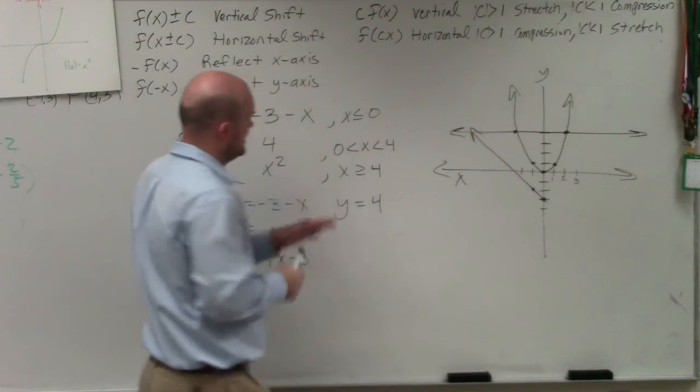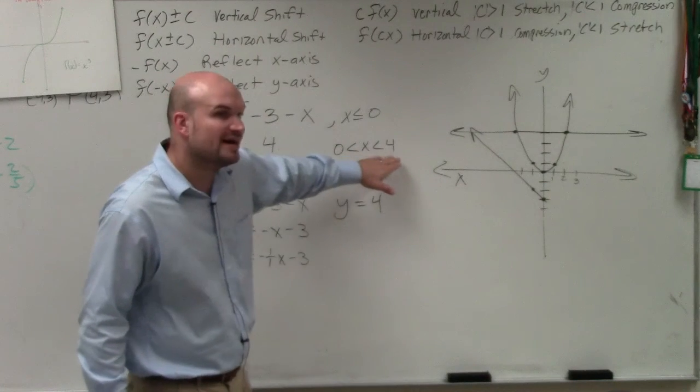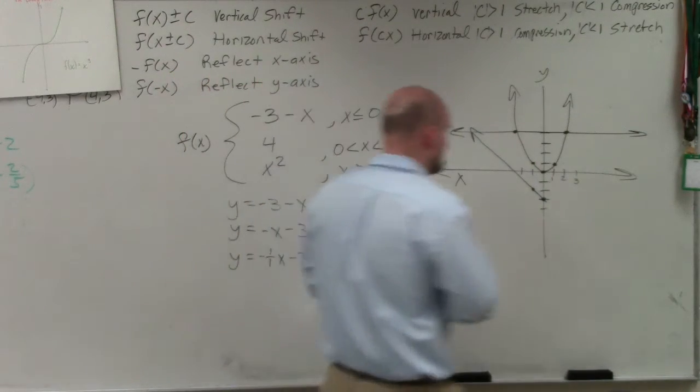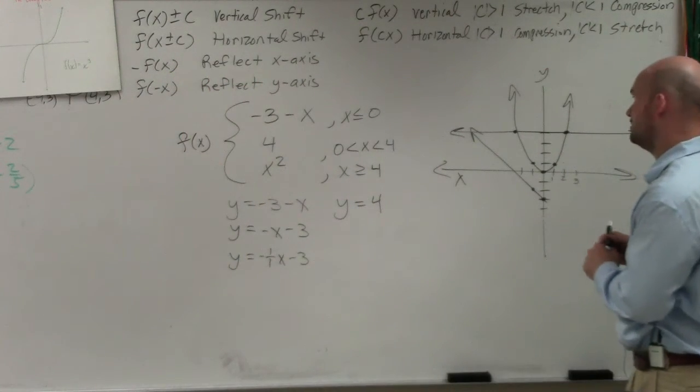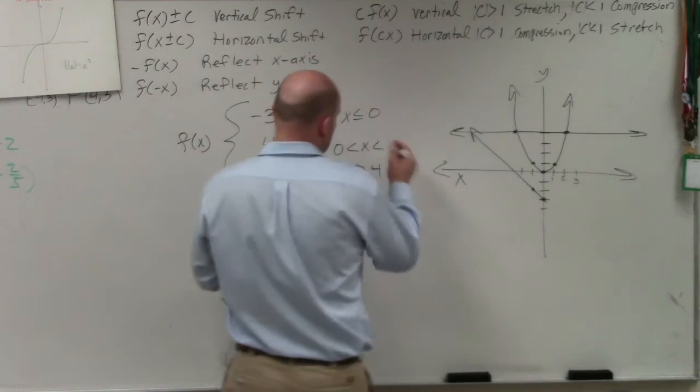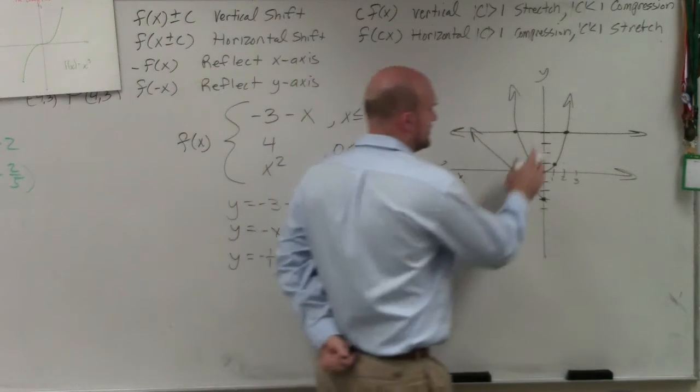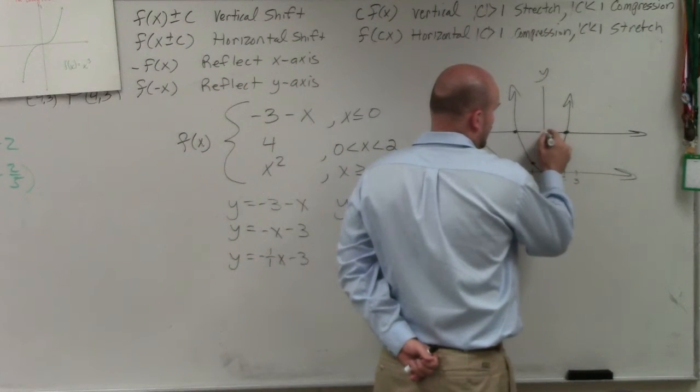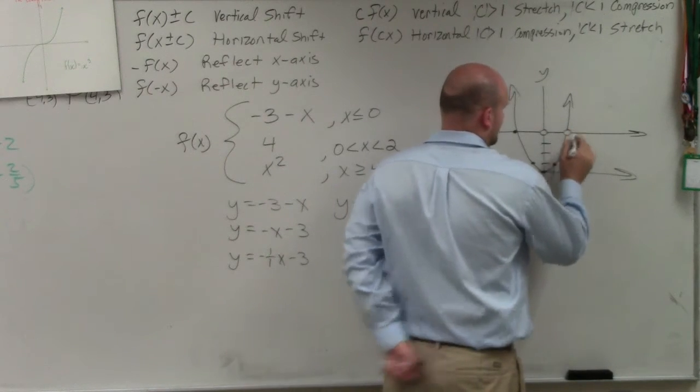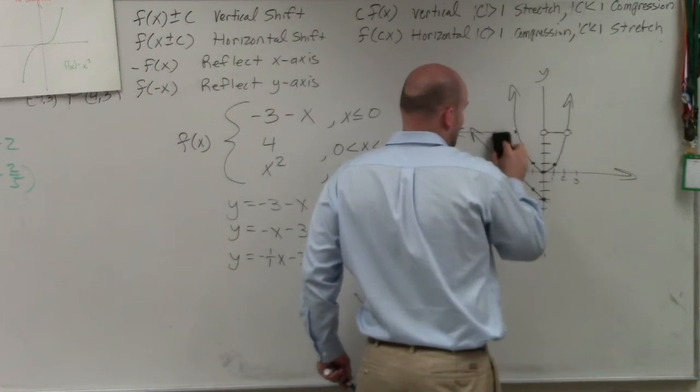Then this one says only graph y equals 4 between 0 and 4. But it's less than, it's not less than or equal to. So those are now open circles. So between, oh shoot, that should have been 2. Sorry, I did make a mistake. That should be 2. So between 0 and 2. So therefore, this is now an open circle between 0 and 2, and that is an open circle. Everything else on y equals 4 is no longer graphed.